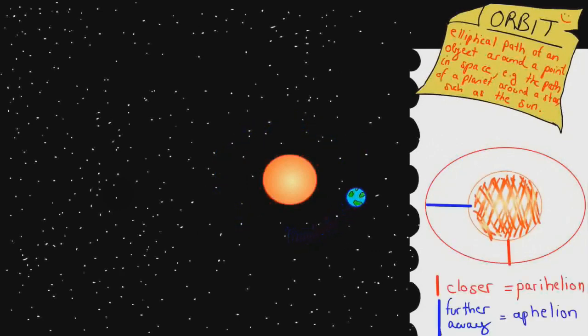Because it's elliptical, the Earth is sometimes closer to the Sun and sometimes further away. This is known as perihelion or aphelion. This doesn't affect the temperature much though.